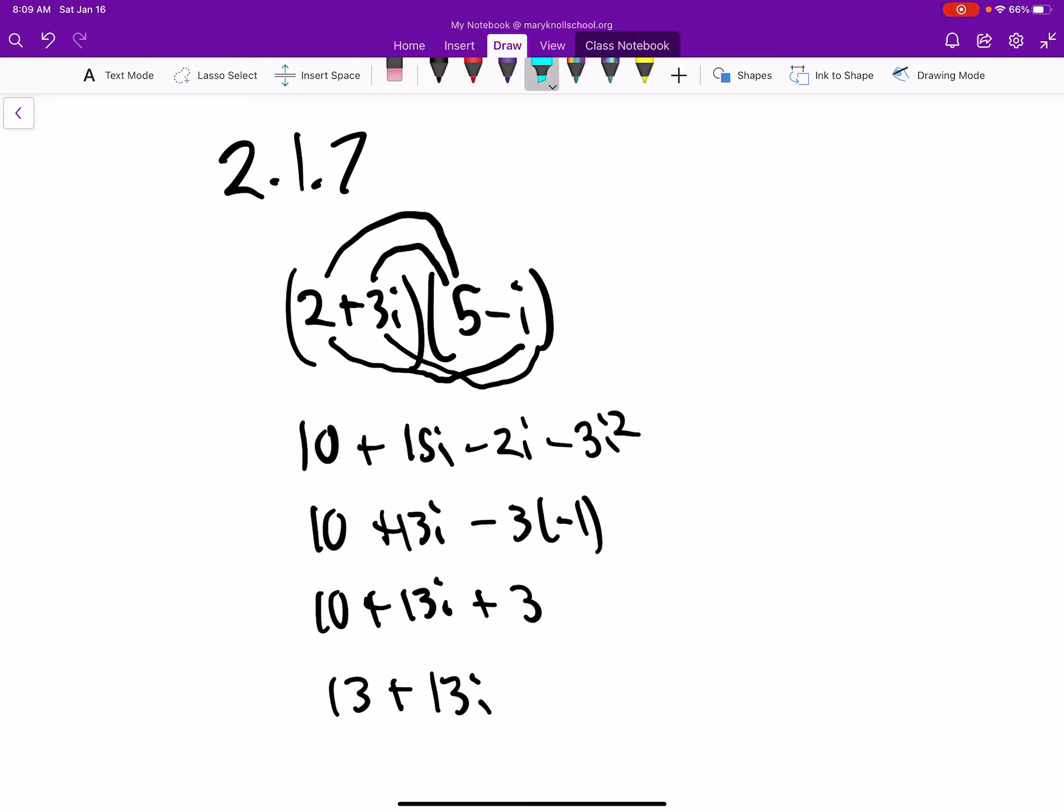Now, remember that i squared is actually negative 1, so this whole thing will end up being a positive 3, and a positive 3 plus 10, we end up getting 13.